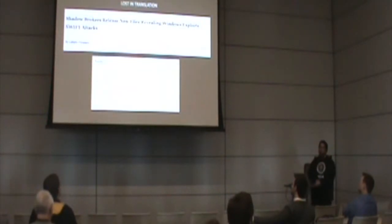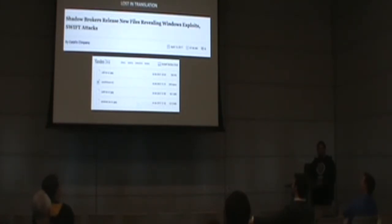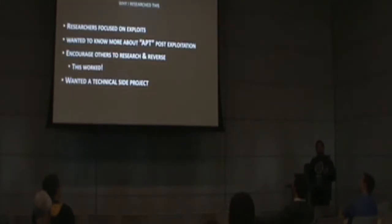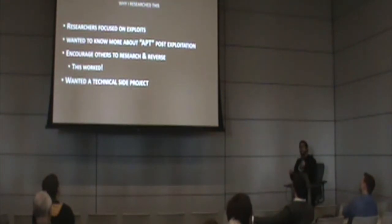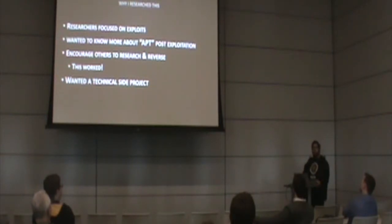Around this time last year, April or so, the Shadow Brokers leaked a bunch of information in one of their leaks titled 'Lost in Translation.' Lost in Translation included information about a SWIFT hacking operation against a Middle Eastern organization, as well as a bunch of Windows tools and exploits. Most researchers focused on the exploits — famous ones like Eternal Blue, Eternal Romance, and Eternal Synergy — but a fully functional post-exploitation framework was also included in this leak.